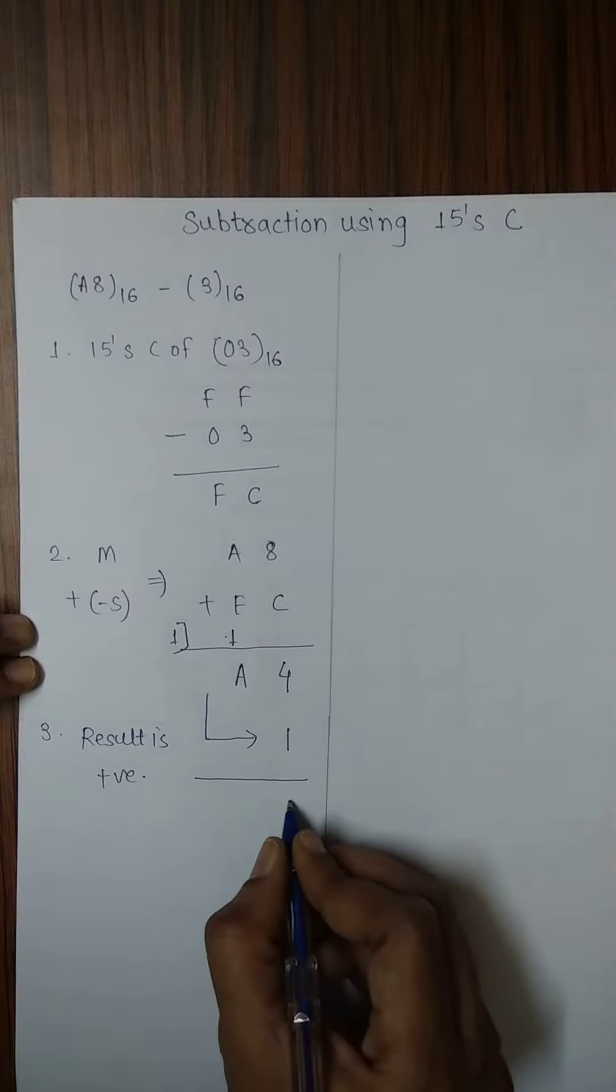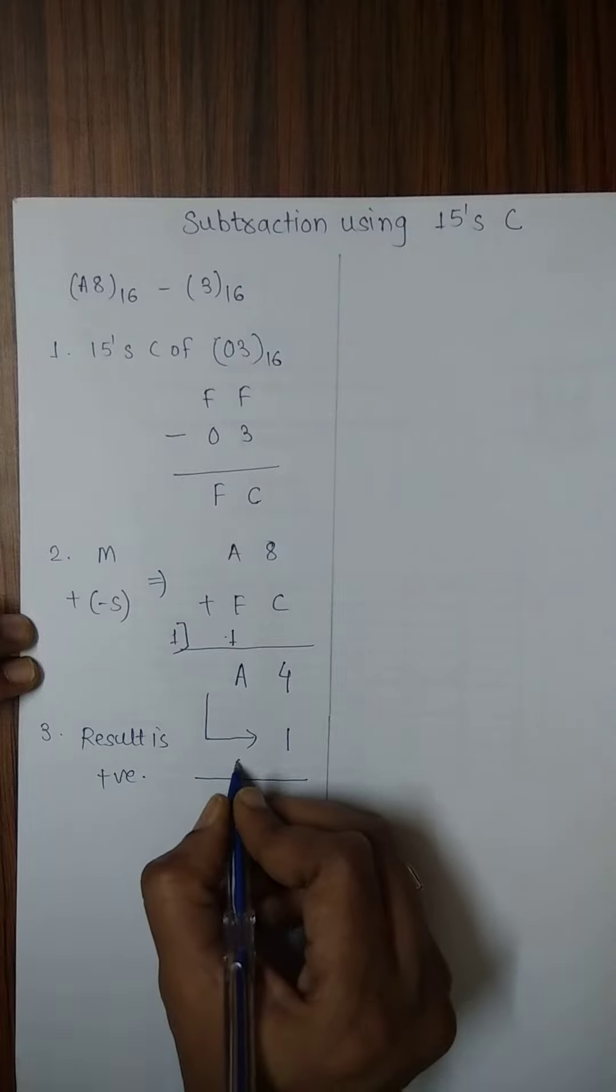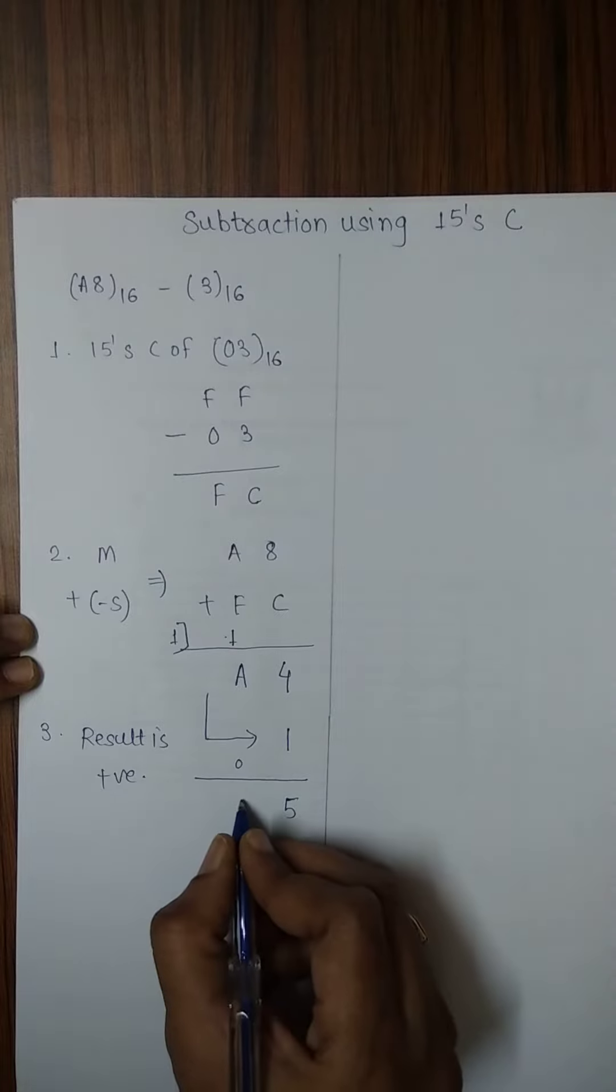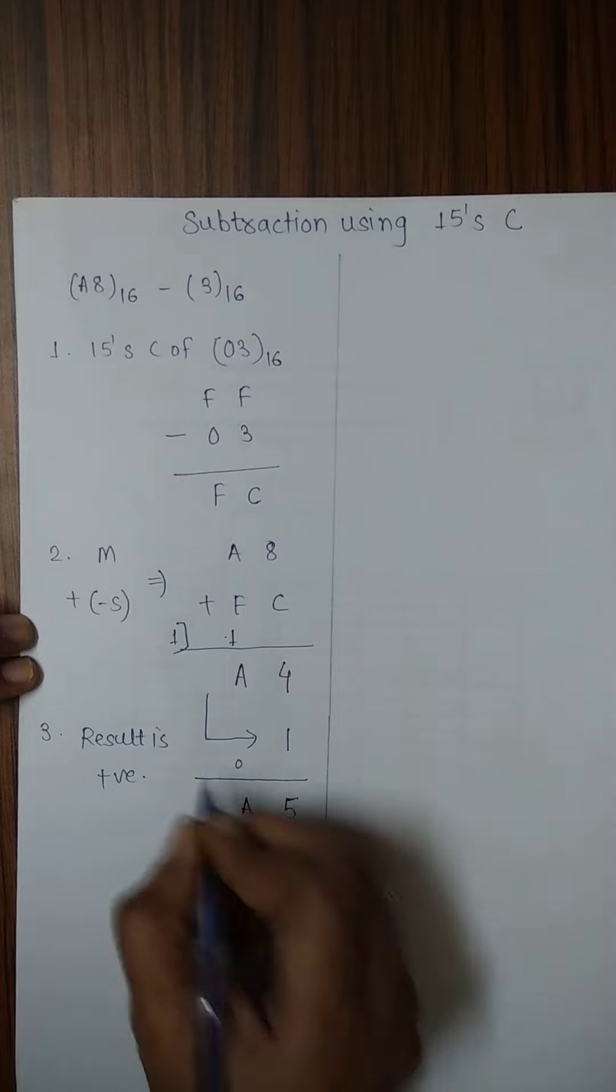4 plus 1 equals 5. 5 modulus 16 is 5. 5 divided by 16 is 0. A plus 0 is A. A modulus 16 is A. A divided by 16 is 0.